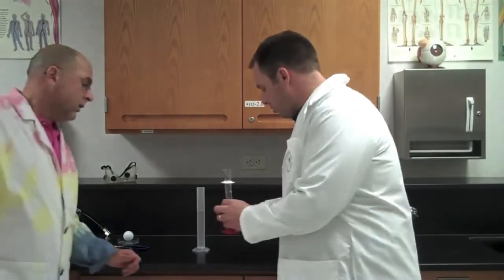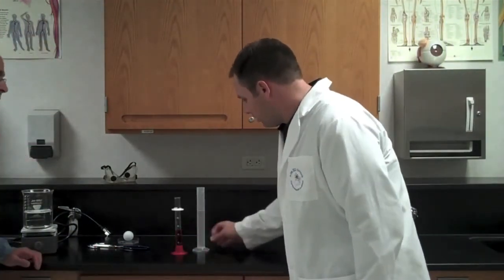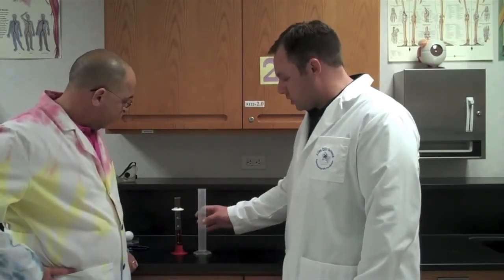This right here is volume, measuring volume. Now you can actually measure volumes in several different ways. You can measure solid volume, you can measure gas volume. Here we have liquids, water being a liquid. So we're measuring liquid volume. We use a graduated cylinder to measure liquid volume. These are both graduated cylinders, they're two different types.